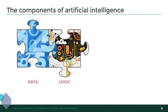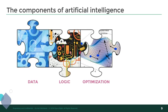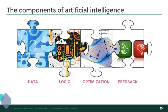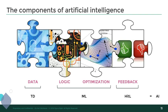The third component is optimization, because the equations that rule machine learning need to be optimized using optimization algorithms — this is why machine learning scientists are traditionally good mathematicians as well. Then you have the concept of feedback, which is extremely important in machine learning. At Figure Eight, we use a human-in-the-loop approach, essentially using human feedback in this process. We believe that artificial intelligence is really the combination of training data with machine learning and human in the loop.